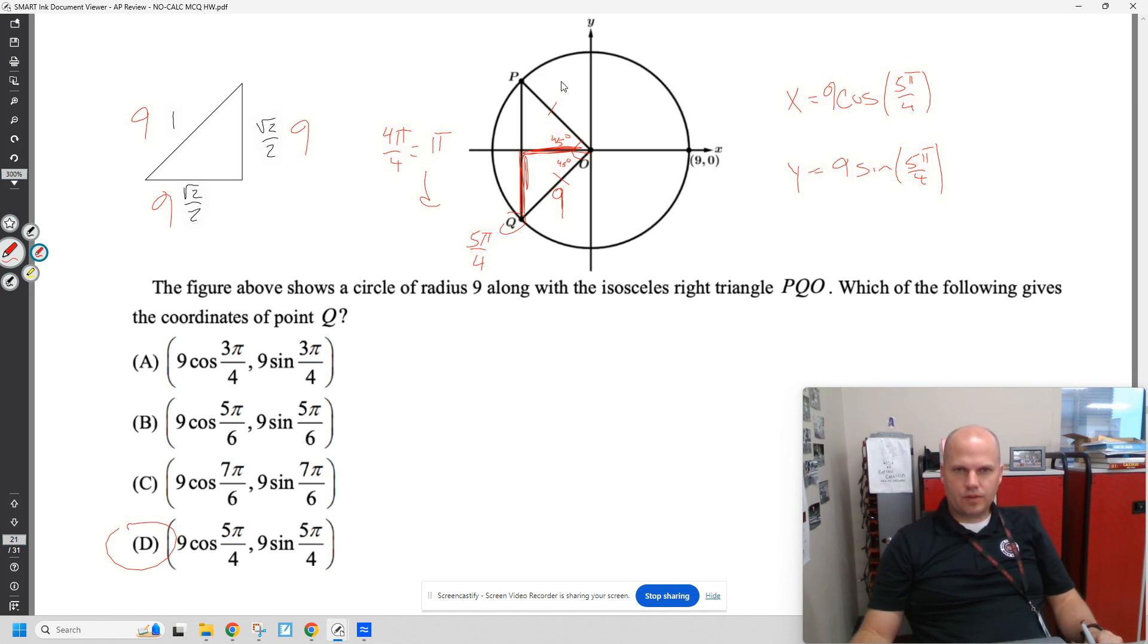I'm trying to think of another way. If this is isosceles, I think you have to know that this is a right angle, or you know that this is nine, this is nine, this would be 9√2. Split that in half: 9√2 over 2, which is your side lengths of your 45-45-90 scaled by nine.